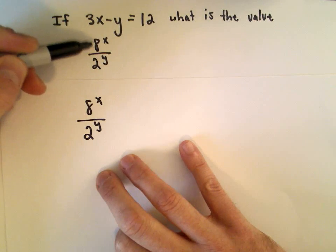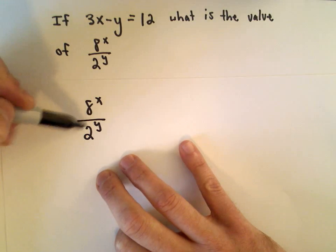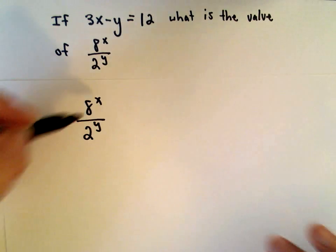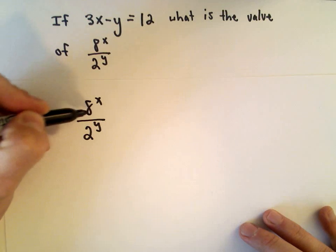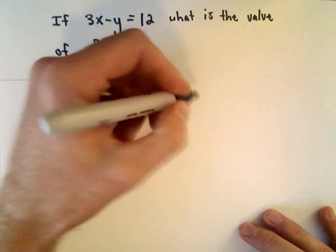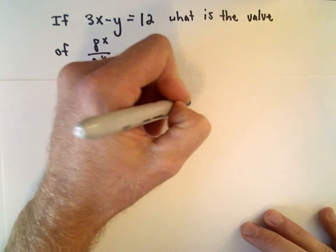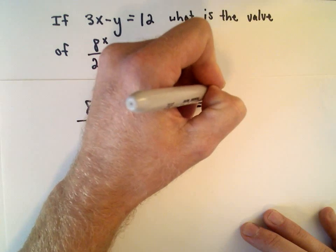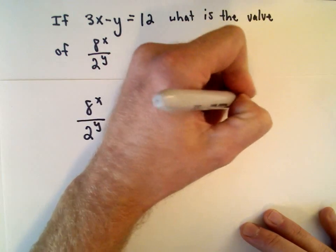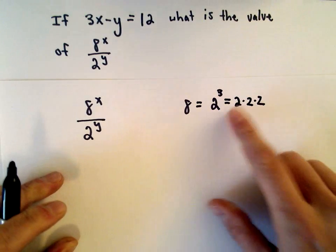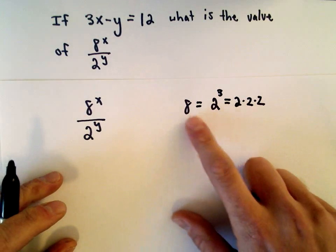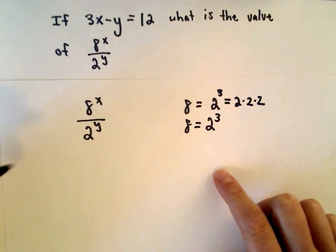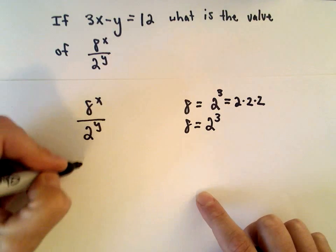If we look at 8 raised to the power of x divided by 2 raised to the power of y, the first key observation is noticing that 8 is a power of 2. We can write 8 as 2 raised to the 3rd power, because 2 times 2 is 4, times 2 gives us 8. So 8 equals 2 raised to the power of 3, and I'm going to substitute that in.